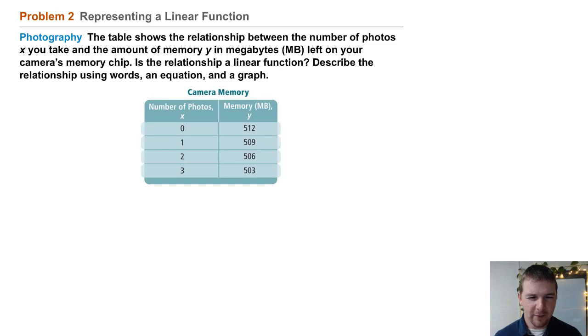Here we have the table. Number of photos X: 0, 1, 2, 3. Those are increasing by 1 each time. Then the amount of memory Y remaining on the disk: 512, 509, 506, 503. So it looks to be decreasing by 3 megabytes each time.